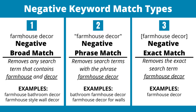Over here on the left hand side we have negative broad match. For example, if I wanted to target the negative broad match keyword "farmhouse decor," that would remove any search term that contains both farmhouse and decor in it. Some examples would be farmhouse bathroom decor or farmhouse style wall decor. Basically any search term containing those two words would be excluded, or if I just targeted farmhouse alone, any search term containing farmhouse would be removed.